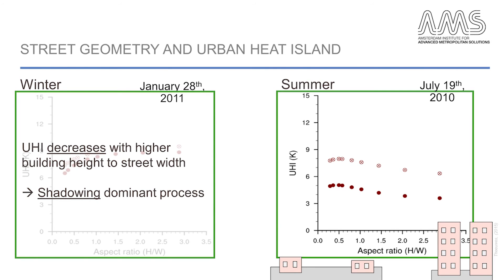In a mid-latitude summer, the urban heat island can also decrease with a larger height-to-width ratio of the streets. This means that during this time the shadowing effect is the dominant process.